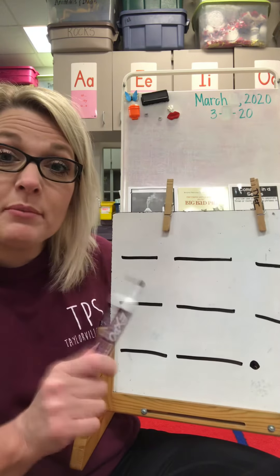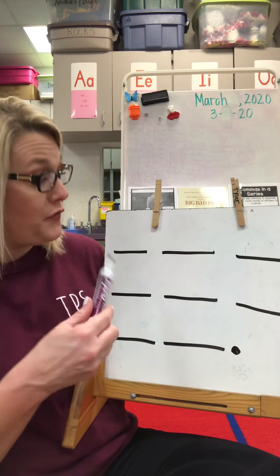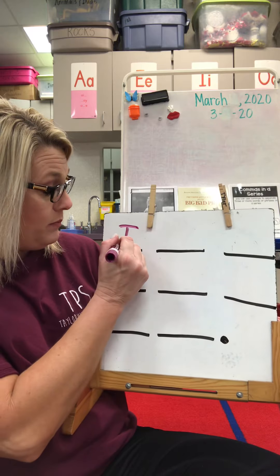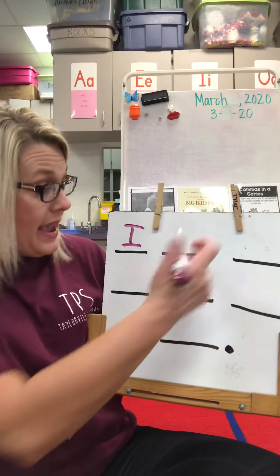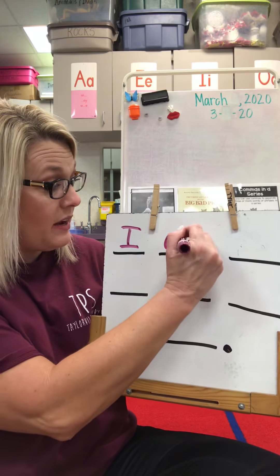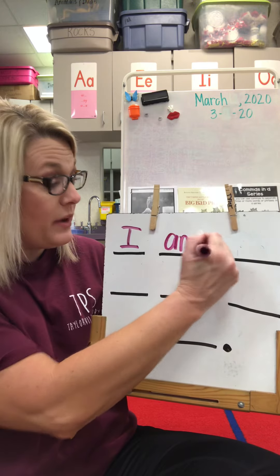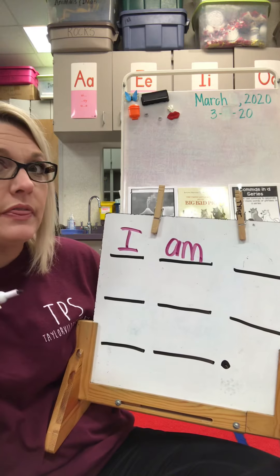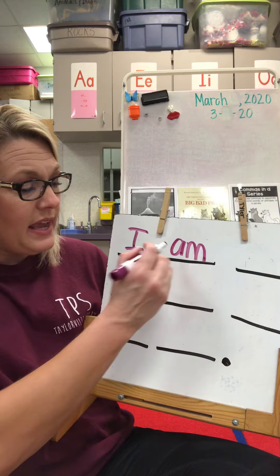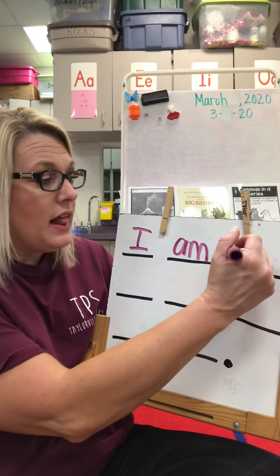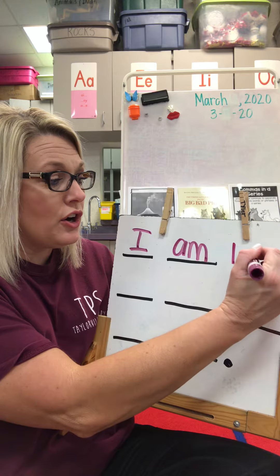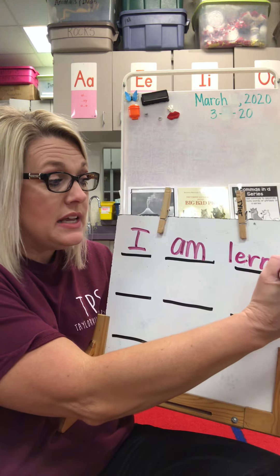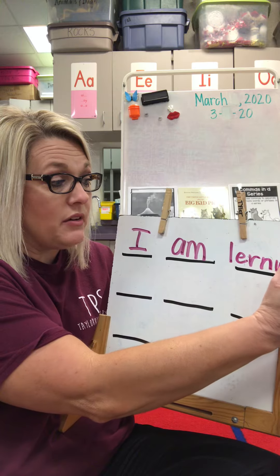So I'm going to write my sentence. I know that the first word is 'I' and I know that needs a capital. 'I am' — 'am' is a sight word that we read a lot; you should know how to spell that without sounding it out or thinking real hard. 'I am learning' — L, 'er' like butter, N, 'ing'. And we know that suffix.